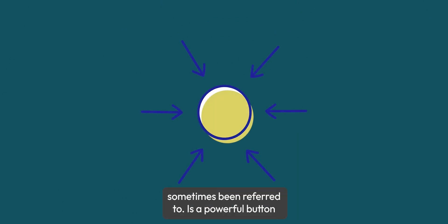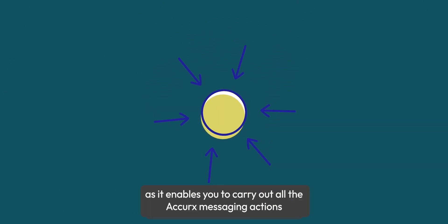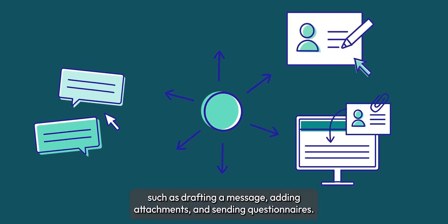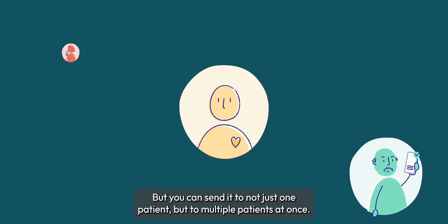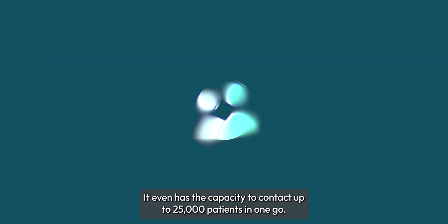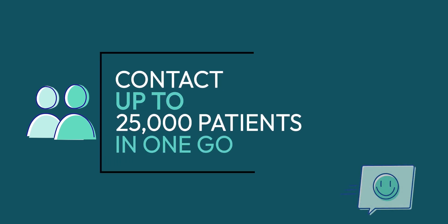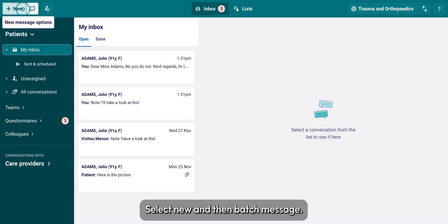Batch messaging, or the golden button as it's sometimes been referred to, is a powerful feature that enables you to carry out all the Acurex messaging actions such as drafting a message, adding attachments, and sending questionnaires. You can send it to not just one patient but to multiple patients at once — it even has the capacity to contact up to 25,000 patients in one go. Let me show you how it works: select New and then Batch Message.